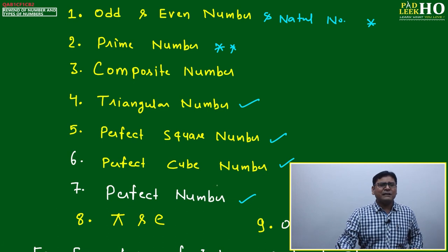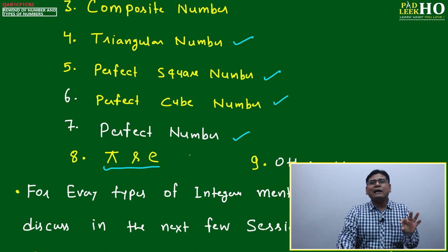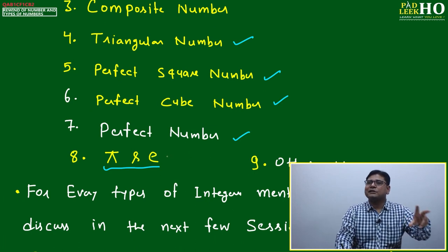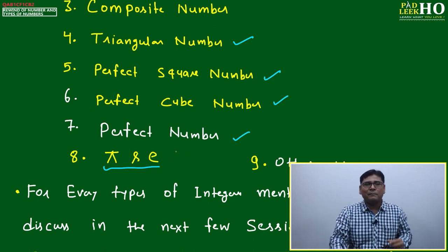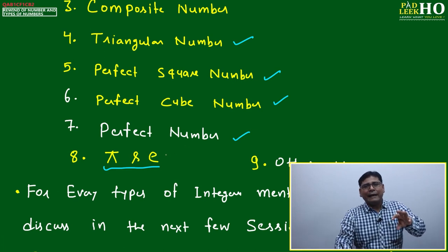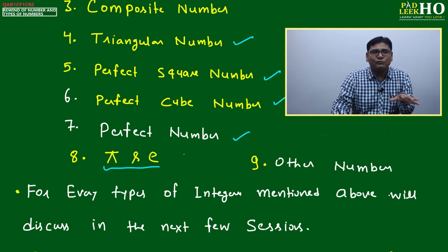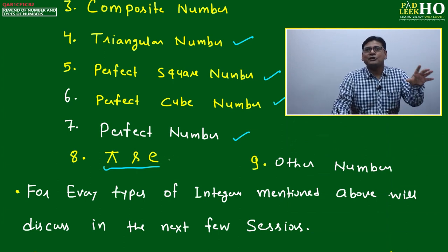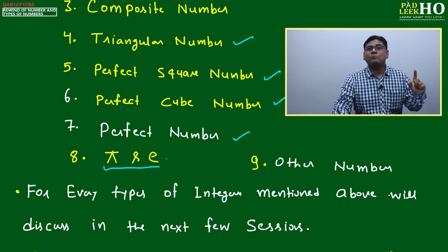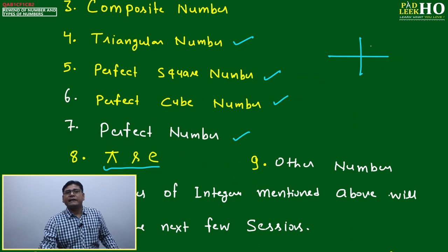There is also the perfect number, which is a different category — don't confuse it with perfect square. After that, we'll highlight pi and e a little bit: how pi is related to primes, and how it relates to odd, even, and triangular numbers. Academically for CAT it's not very helpful, but you will get an idea of the importance of pi in the universe.